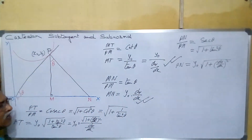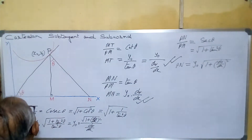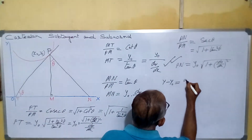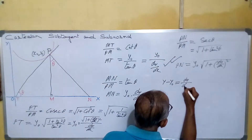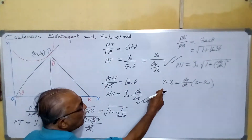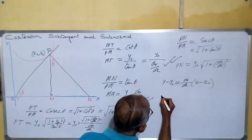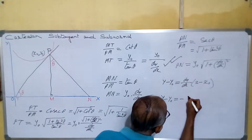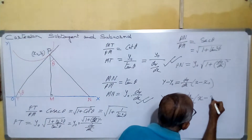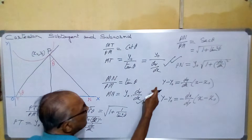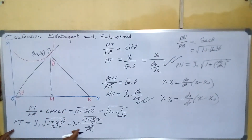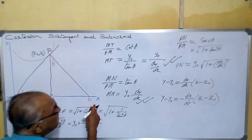Yes, dy/dx is at this point. The equation of tangent is y − y₀ = (dy/dx)·(x − x₀), where dy/dx is evaluated at this point. The equation of normal is y − y₀ = −(dx/dy)·(x − x₀), which can also be written as −1/(dy/dx)·(x − x₀). To summarize: MT is the length of sub-tangent, MN is the length of sub-normal, PT is the length of tangent, and PN is the length of normal.